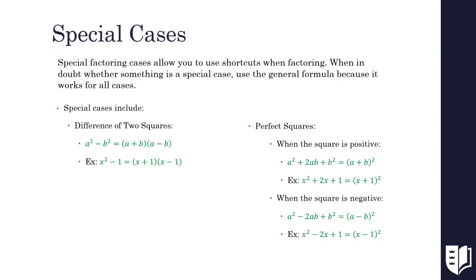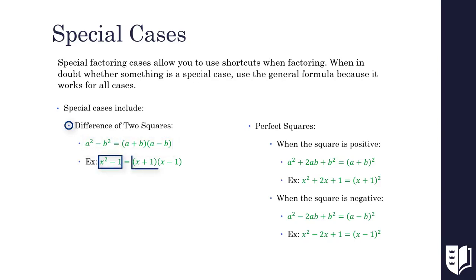There are several special cases that allow us to use shortcuts when factoring. When in doubt whether a quadratic is a special case, we can always use the general formula, because that works for all cases. Two of the most prevalent cases are a difference of two squares and perfect squares. A difference of two squares will always have the form a squared minus b squared, where our coefficient and variable in our two terms also need to be a square. This case factors to a plus b times a minus b. The quadratic x squared minus 1 factors to x plus 1 times x minus 1 because the square root of x squared is x and the square root of 1 is 1.